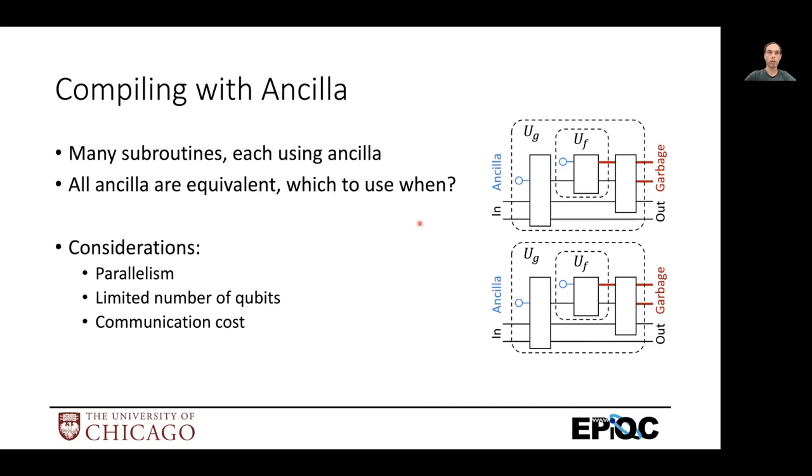But in general, the compiler has several considerations. So it can prioritize parallelization, or it can prioritize number of qubits, which is our space time trade off. And then there's other considerations like communication costs, where, in a future lecture, when we talk about mapping and how qubits are actually located on devices. There's a cost to moving qubits across the device versus having different sets of Ancilla using different parts of the algorithm.